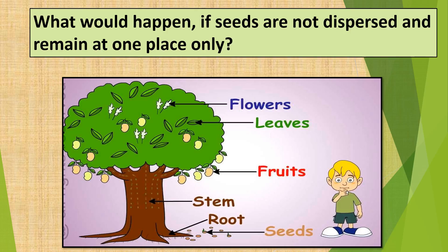What would happen if seeds were not dispersed and remained in one place only? If the seeds did not spread out and remained in one place, then all of them would compete for water and minerals from that small area of earth. As a result, none of the seeds would get enough nutrition to grow properly.